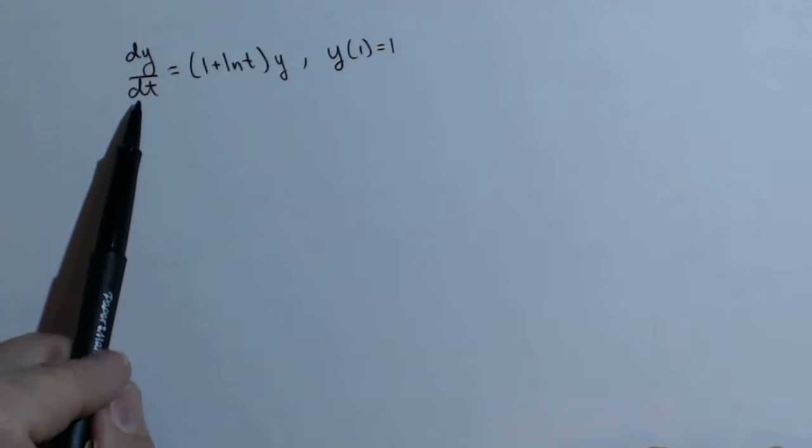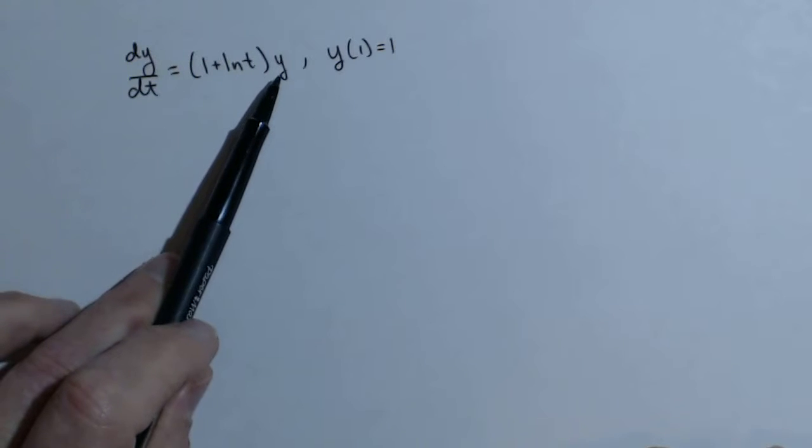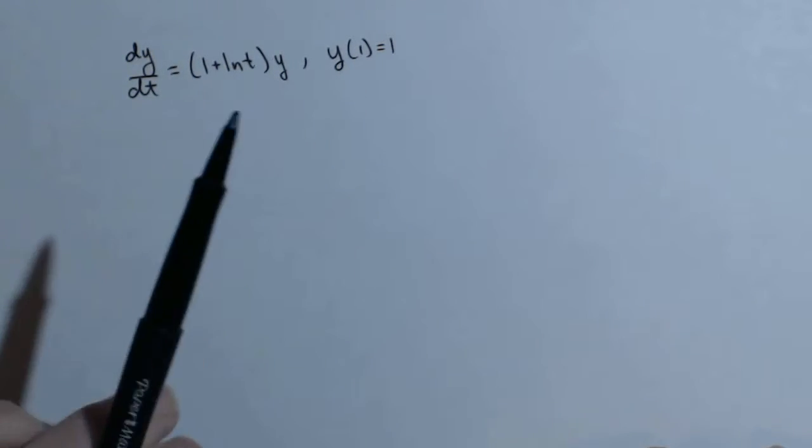So we're going to solve the initial value problem, dy/dt equals 1 plus ln of t times y, where y of 1 equals 1.